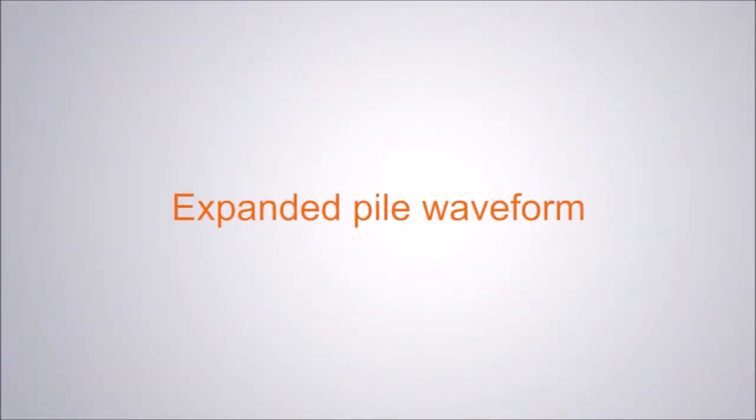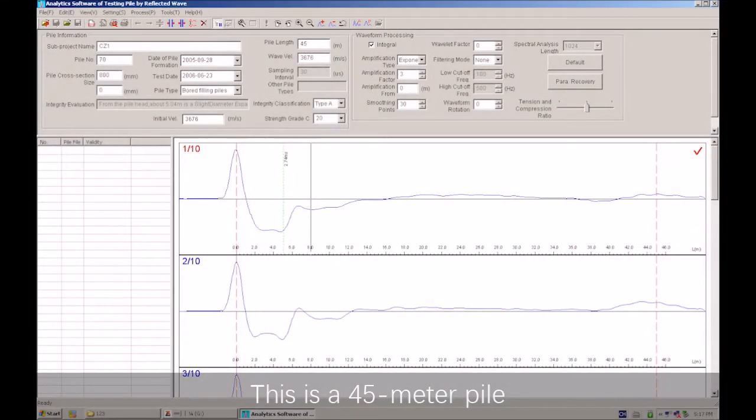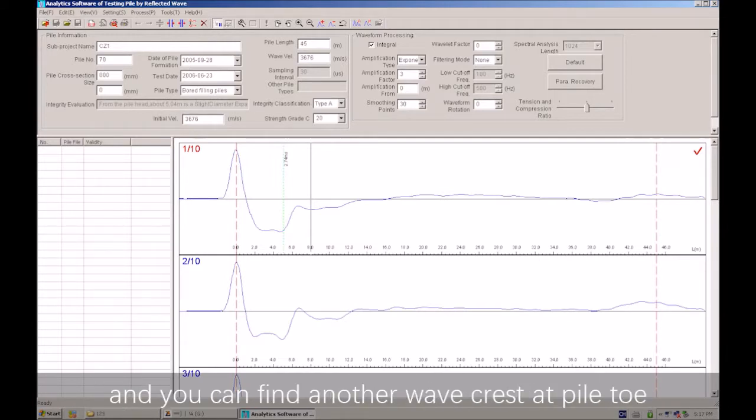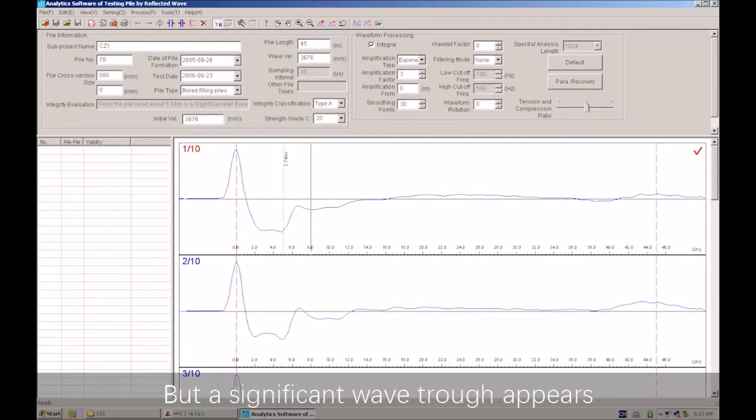Expanded pile waveform: This is a 45-meter pile. The first wave crest is the pile head, and you can find another wave crest at the pile toe. But a significant wave trough appears at about 5 meters. This is a typical waveform of an expanded pile.